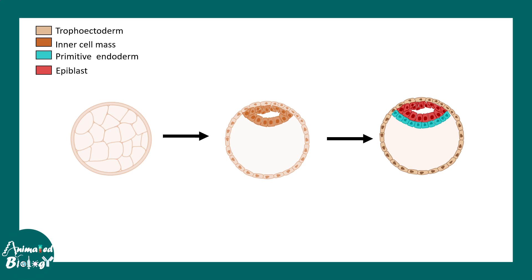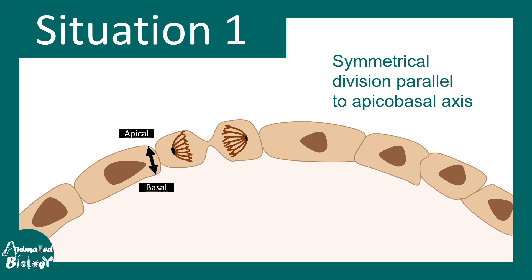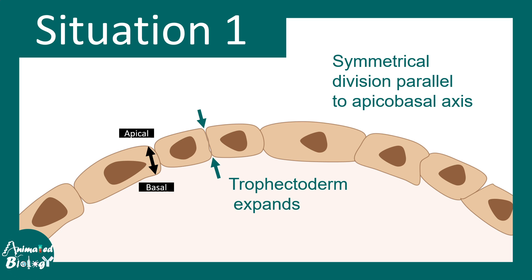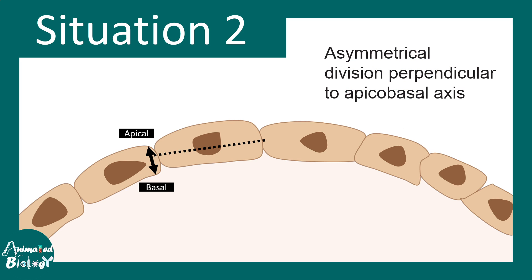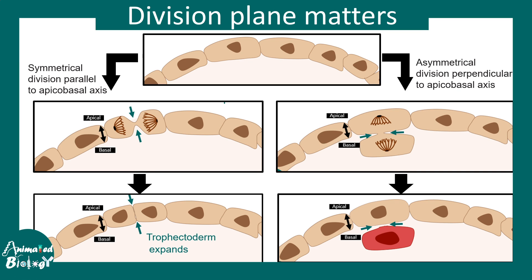This can also be understood from a different angle — not only the environment, but also the division plane matters. From morula to blastocyst transition, if division happens in a plane parallel to the apico-basal plane, those cells give rise to trophectoderm cells. If the division plane is perpendicular to the apico-basal plane, the cells give rise to inner cell mass cells. The plane of division thus leads to different fates, and this is critically important in stem cell fate commitment.